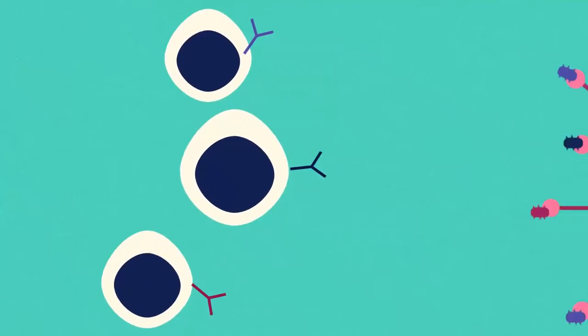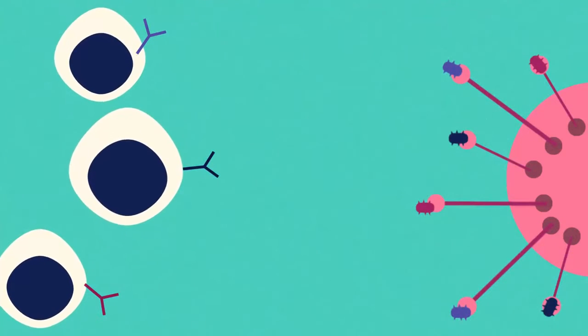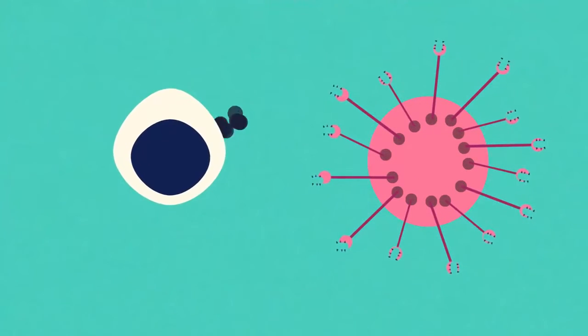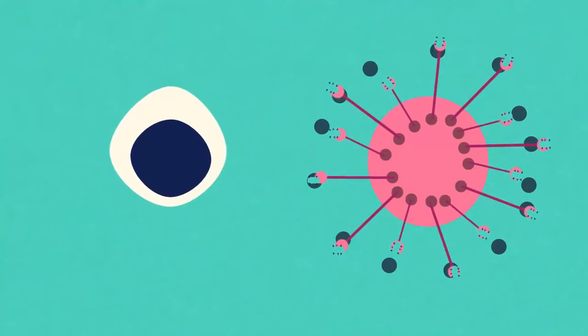Each antibody is very specific. It will only attack one type of bacteria. Other lymphocytes produce anti-toxins which combine with the invaders' toxins and make them harmless.